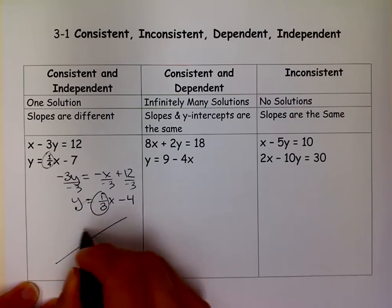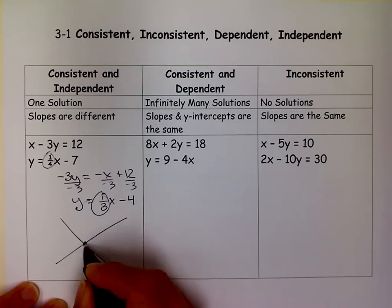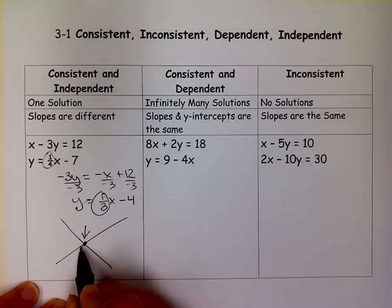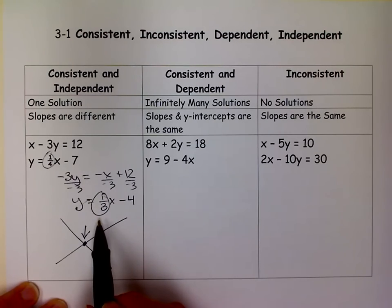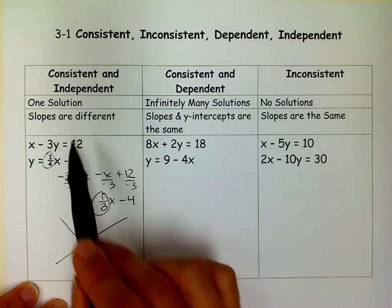That means they actually have a solution, and 1 solution. When the slopes are different, there's 1 solution. So the lines intersect at some point, and that would be your solution. So these kinds of systems, 2 equations of lines that have different slopes, are consistent and independent. They have 1 solution.